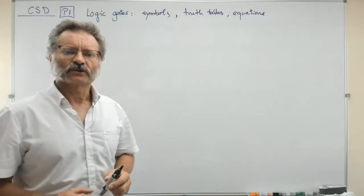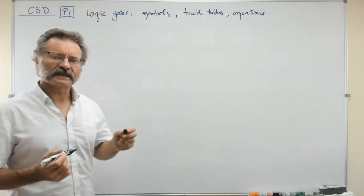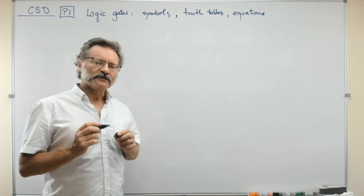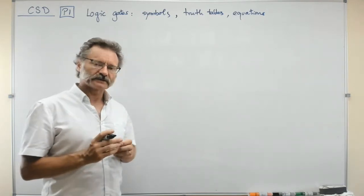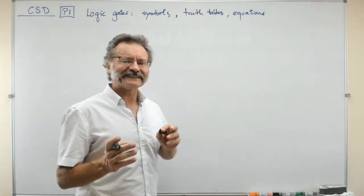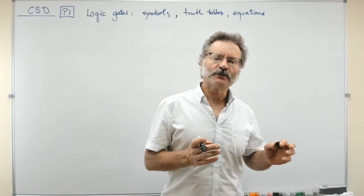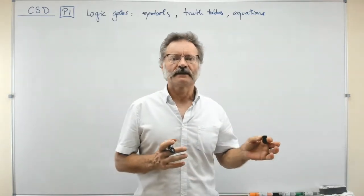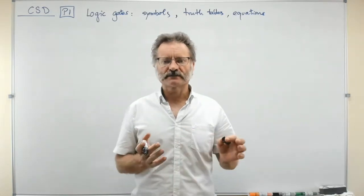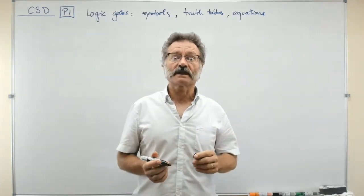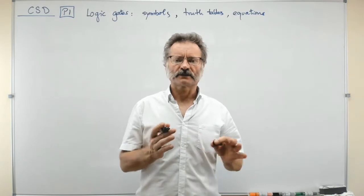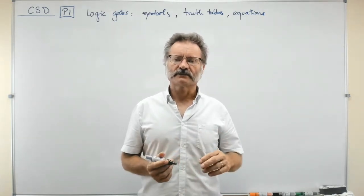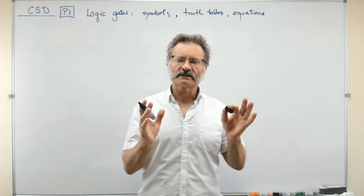If we have to talk about basic gates, we have to talk about buffers and NOTs or inverters, then ORs, then ANDs, then NORs and NANDs, and finally XORs and XNORs. That is the basic set of gates you have to keep in mind when talking about digital circuits. The first idea is imagining that you have a circuit with a single gate inside.